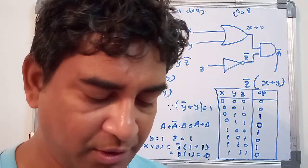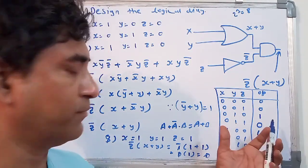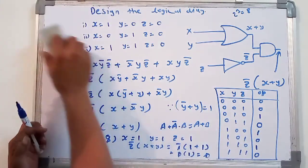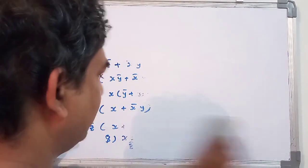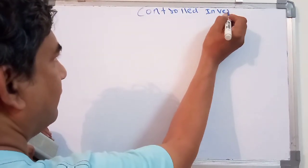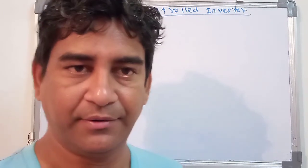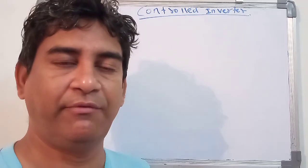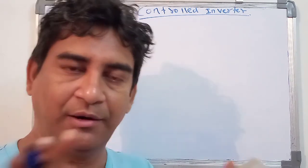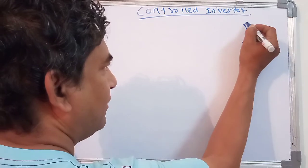Now we are going to start the topic of the controlled inverter. This problem is very important. In this controlled inverter, the main component used is the XOR gate. By using that XOR gate we are able to control the output value — it may be either 1 or 0. The main part connected is a XOR gate.